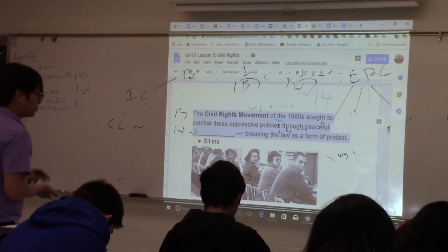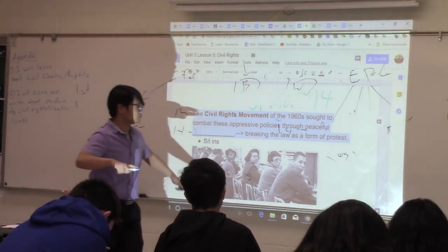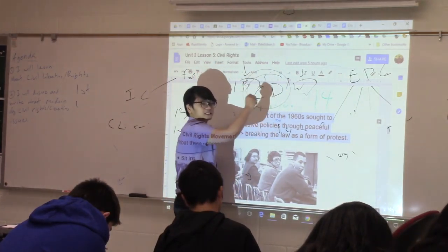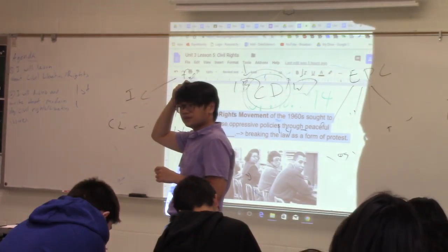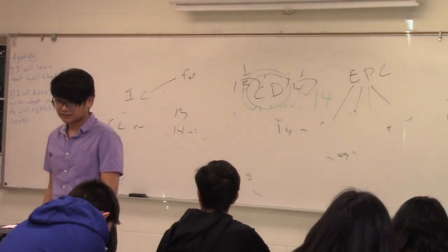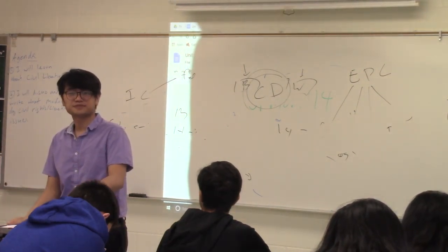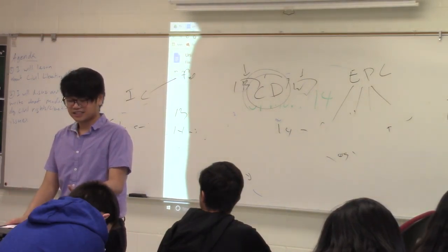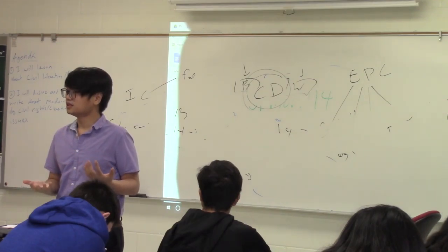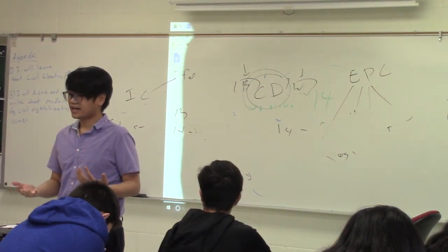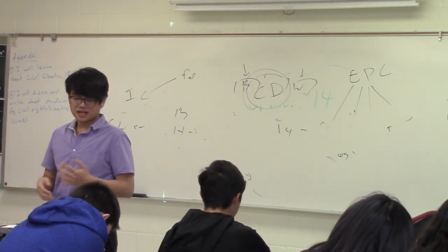Then we get the Civil Rights Movement — fighting for equality in the voting booth and against segregation. In the 1960s, the Civil Rights Movement combated these oppressive policies through peaceful civil disobedience. Civil disobedience is a big topic in this class. Civil disobedience is the practice of disobeying laws that you feel are unjust. You're breaking the law, but doing it in a peaceful manner as a form of protest. If you feel a law is unjust, you disobey it.